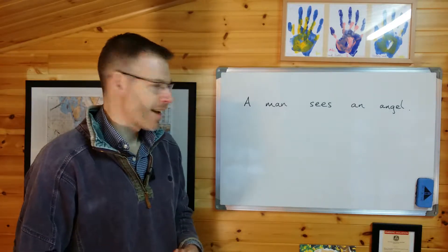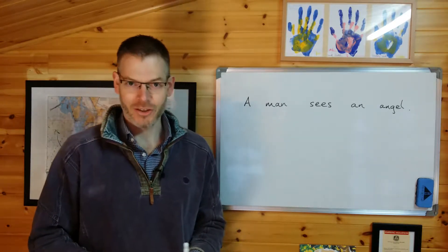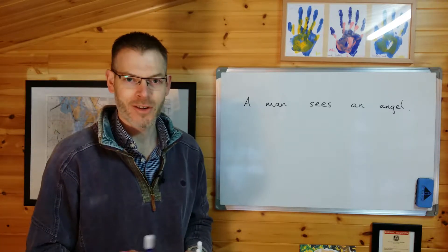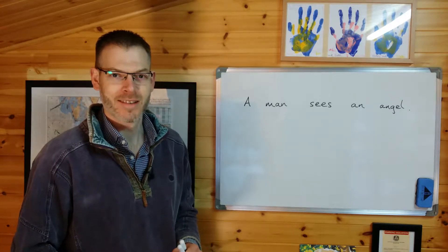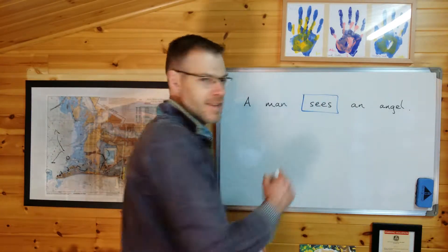Let's take a look at this sentence right here: A man sees an angel. Now, first, find the verb in this sentence. Pause for a second or two, stop the video, and find the verb in this sentence. Okay, you found it. The verb in this sentence is sees.